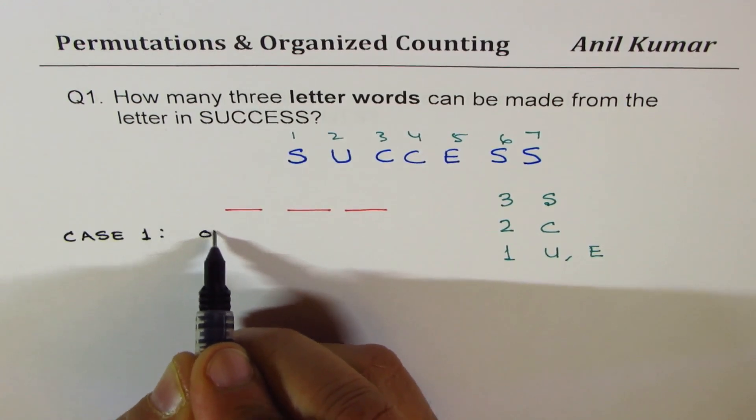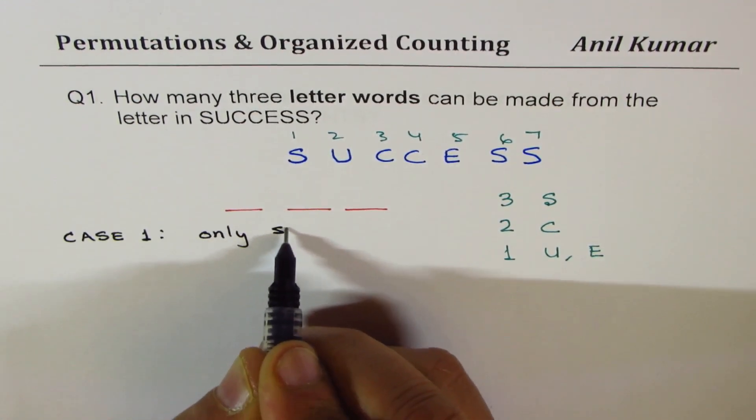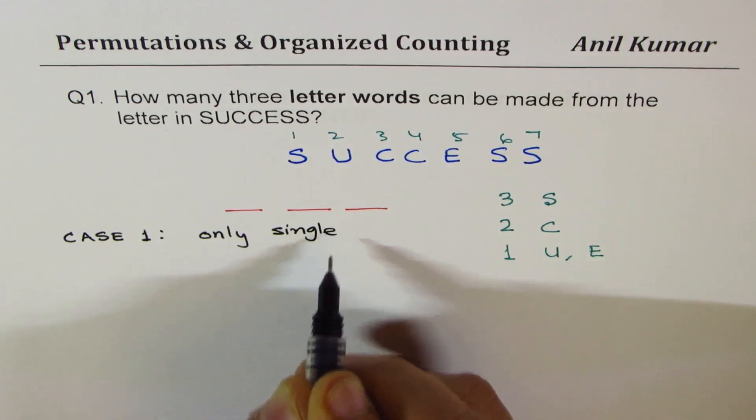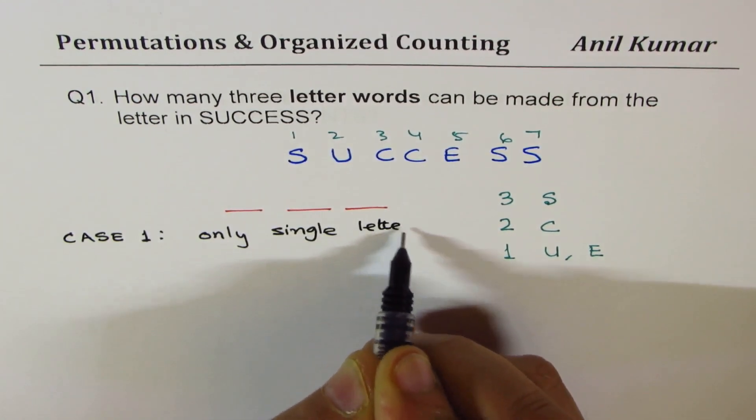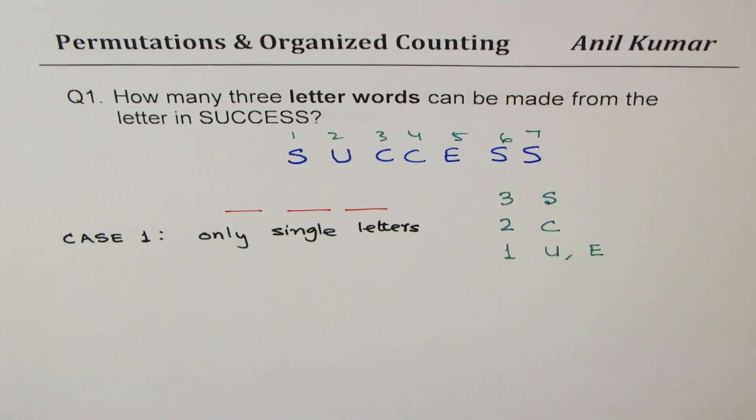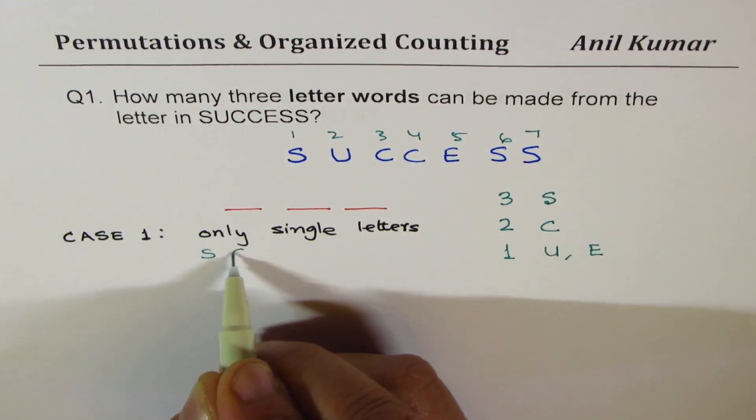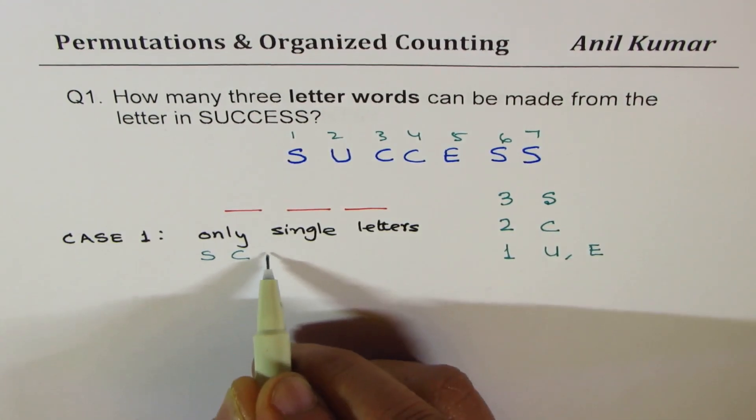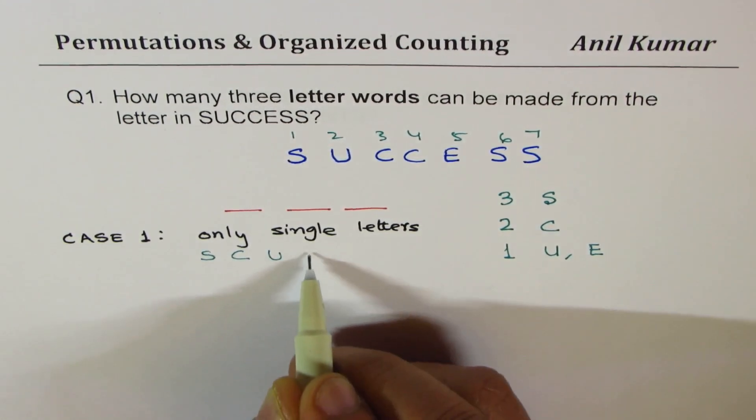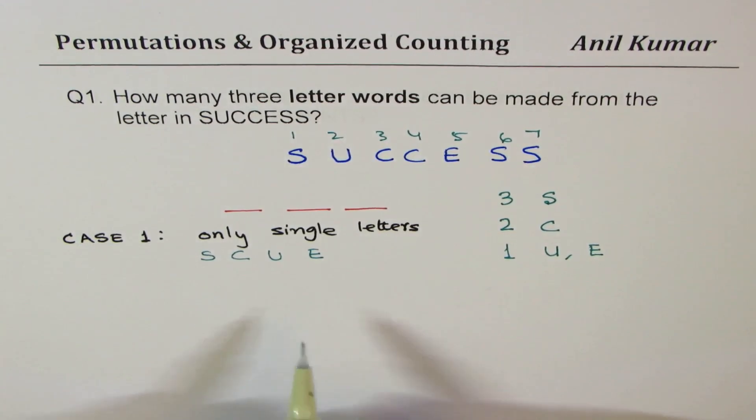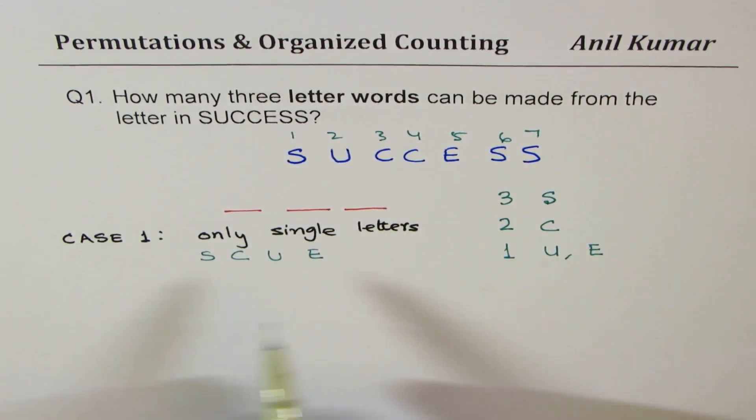So let's say Case 1: here we'll take only single letters, no repetition. When I say only single letters, that means we will be working with only one S, only one C, only one U, and one E. You get the idea, right? So we are working only with four letters.